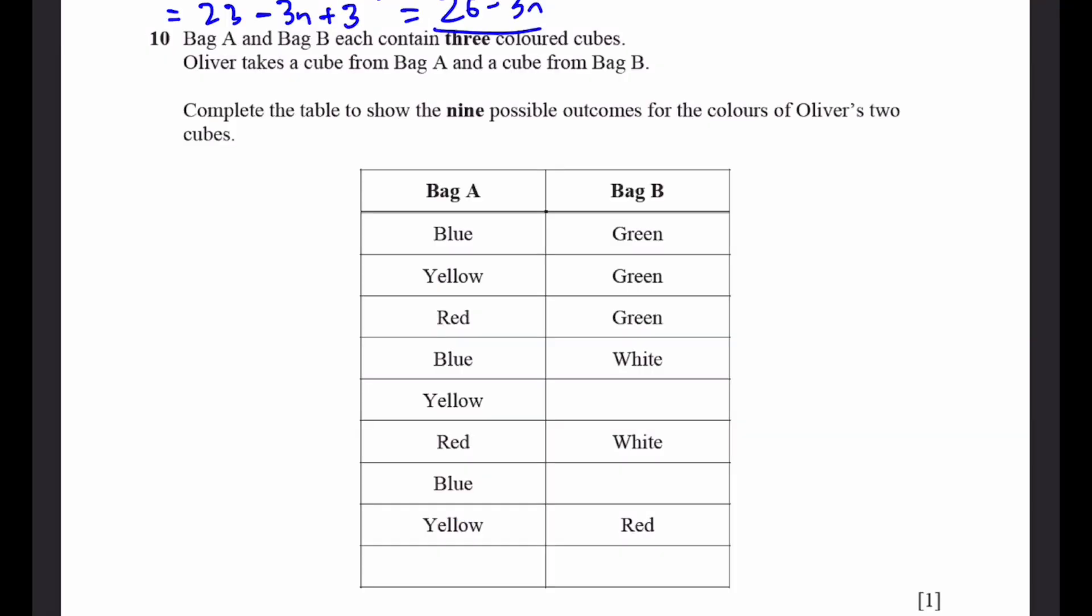Question 10. Bag A and bag B each contain three colored cubes. Oliver takes a cube from bag A and a cube from bag B. Complete the table to show nine possible outcomes for the colors of Oliver's two cubes. Color cubes in bag A are blue, yellow, and red. Three of each. In bag B, we have green, white, and red.